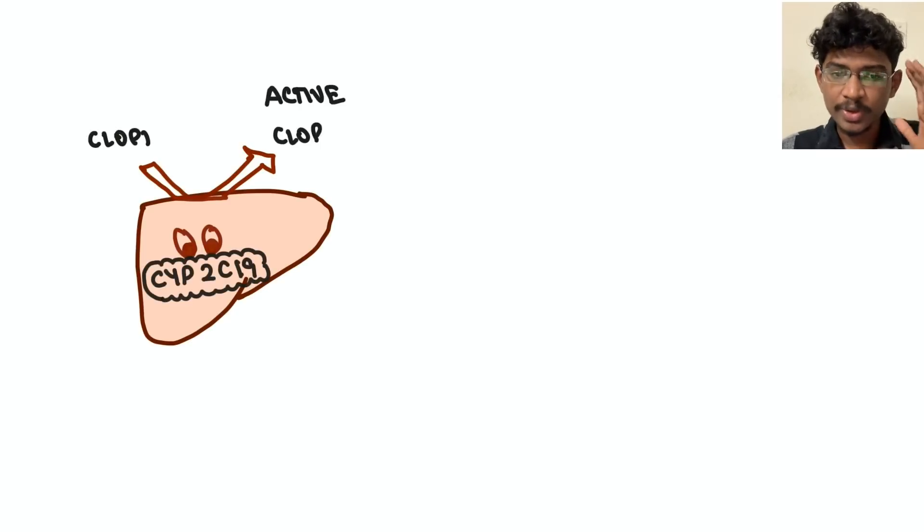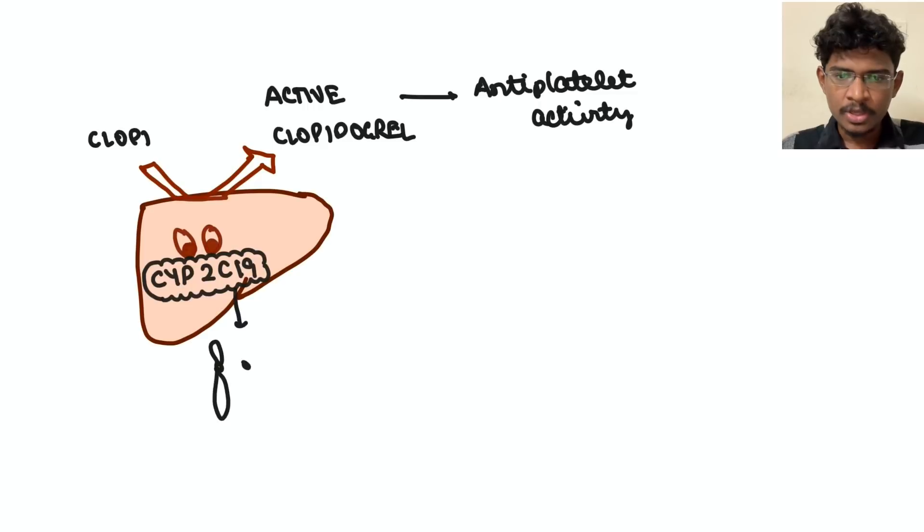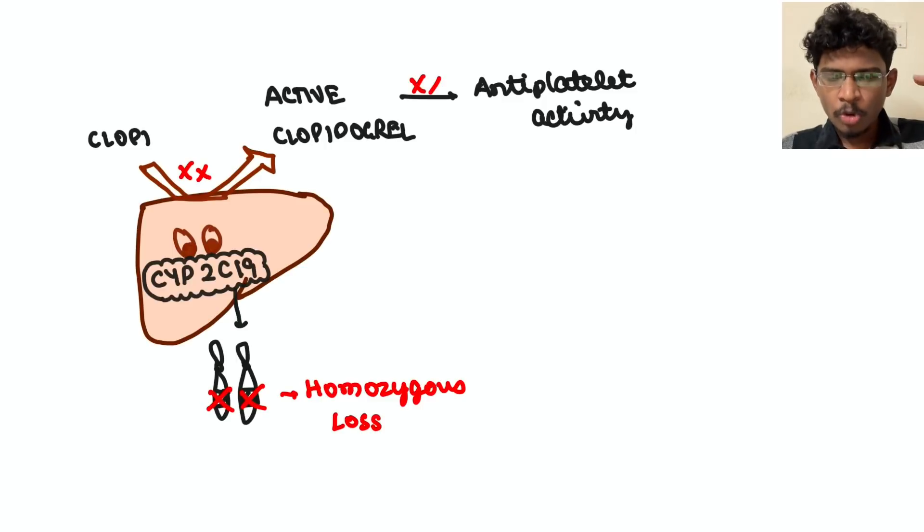In liver, if you see there are cytochrome P enzymes, which is cytochrome P 2C19, which is responsible for activation of this clopidogrel into active clopidogrel tablet so that it has its anti-platelet activity. So in many individuals, meaning in the Indian population it's more common to have polymorphisms, meaning homozygous loss of this allele CYP 2C19, meaning they won't even have this enzyme to activate clopidogrel.